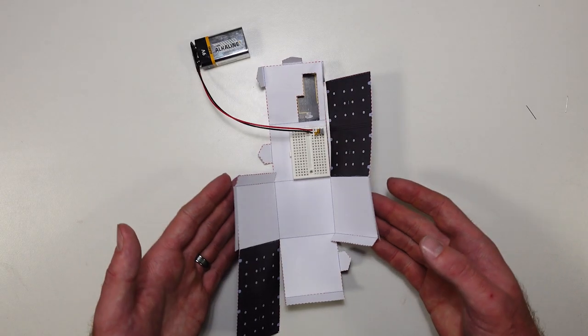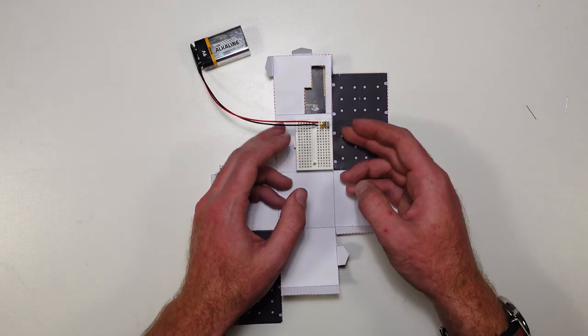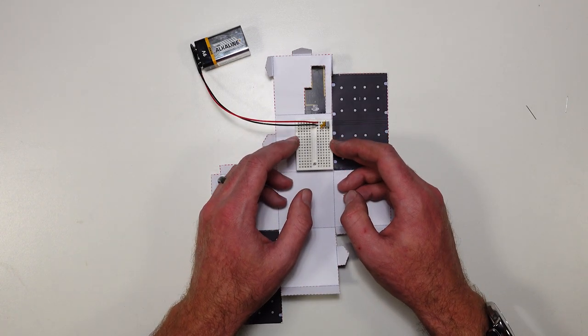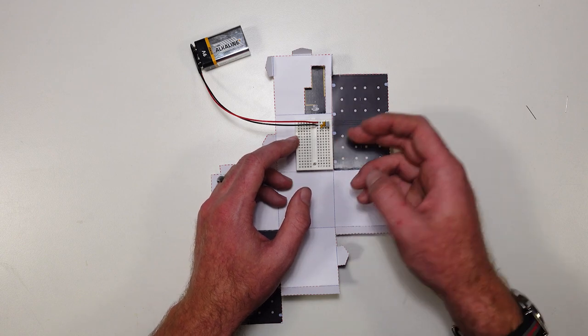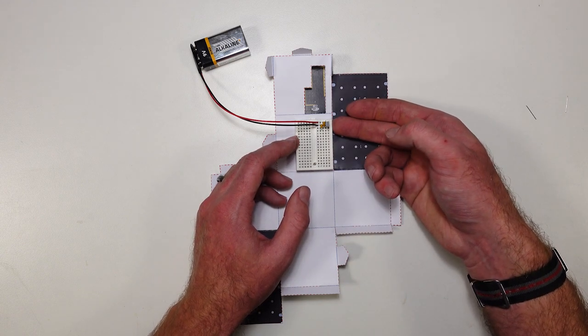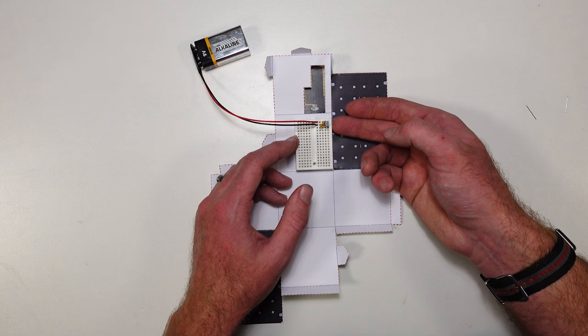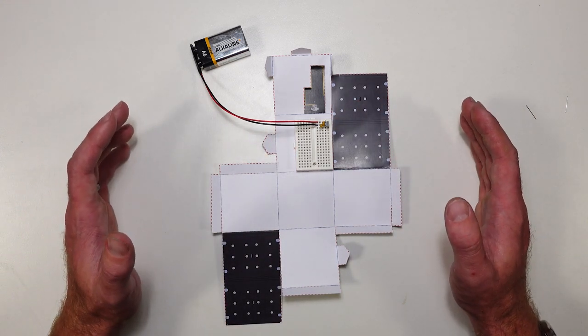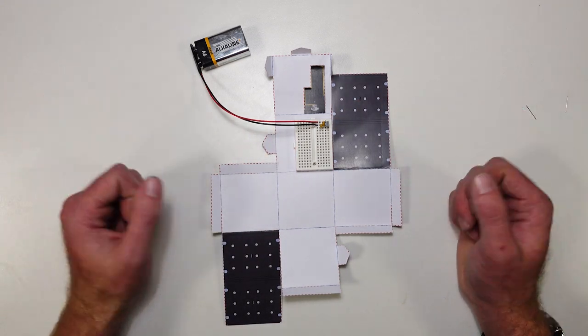All right. So we've got our chassis in place. We have our little payload bay, our breadboard where we can put our electronics and have them work. We've got our power supply. Our electrical power system is in place and tested and working. Next step, we're going to give our CubeSat a mission.